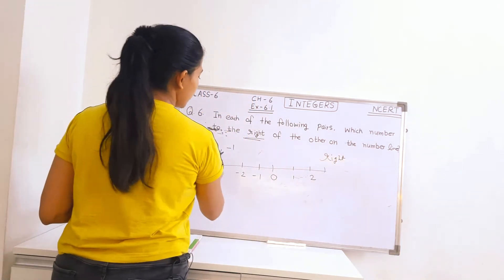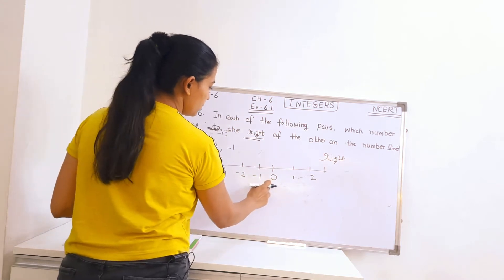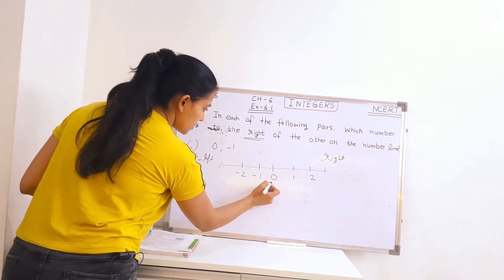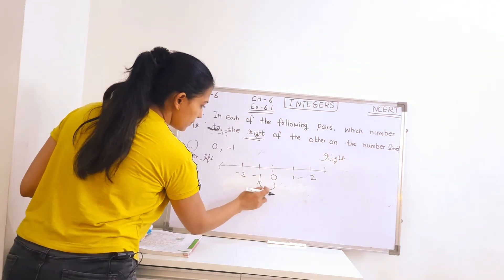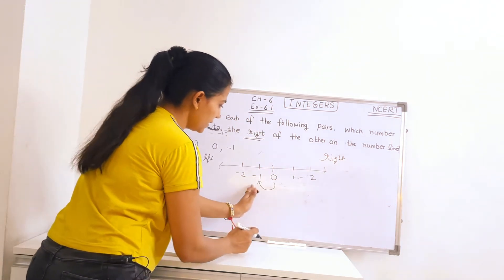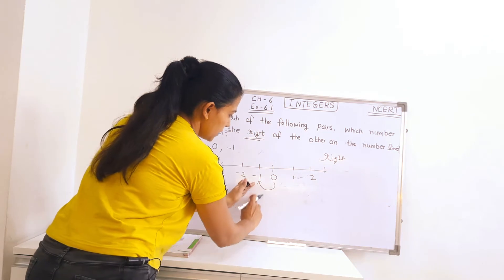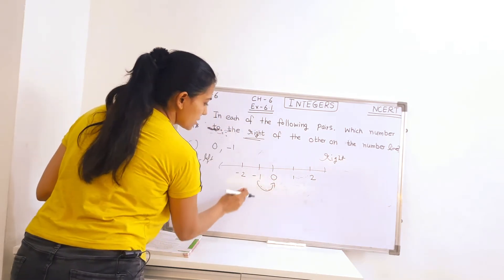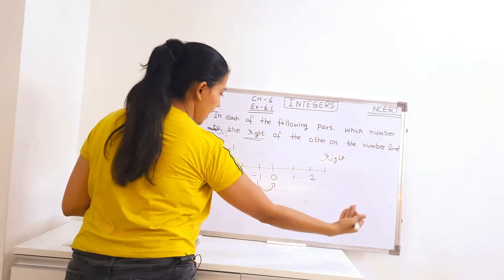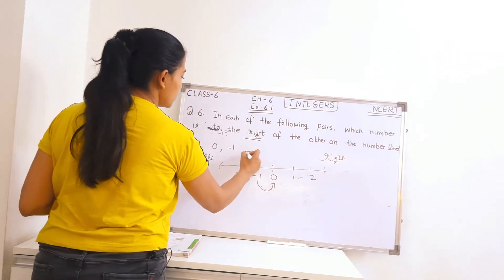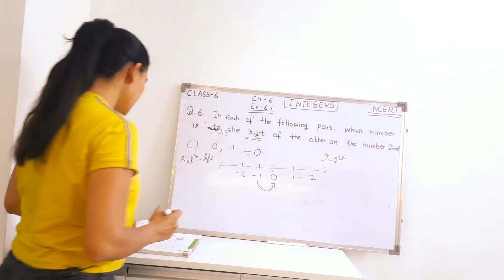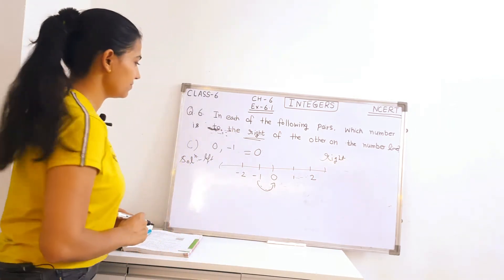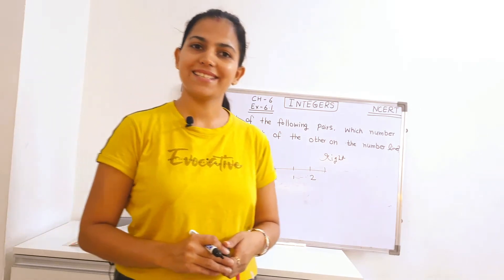So here, 0 and minus 1. Starting from 0, 0 is here and minus 1 is here. So which one is on the right side? If we are moving from minus 1 to 0, then 0 is on the right side. So minus 1 is to the left and 0 is to the right. So the answer to this question will be 0. 0 is on the right side of the number line. Part C is done.